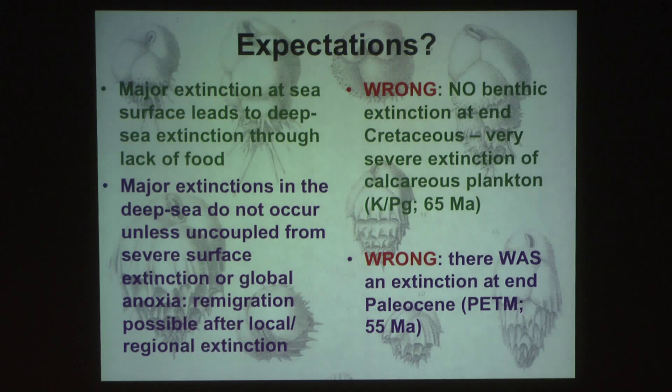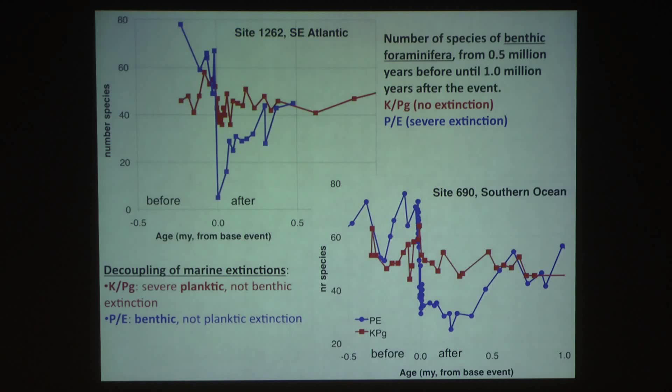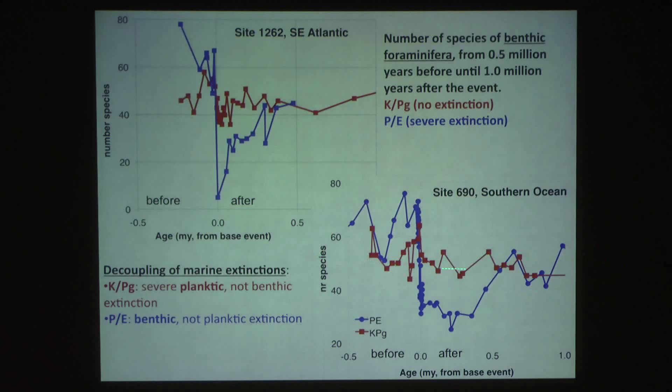And so if you look at this very simple plot — not a lot of data — but if you just look at rarefied species diversity across the Cretaceous-Paleocene and across the Paleocene-Eocene boundary, Cretaceous-Paleocene in red, Paleocene-Eocene in blue, at the same location in the Southeast Atlantic and the Southern Ocean, you can see that your benthic forams don't really care about impacting asteroids, but they get really nervous and many of them go extinct at a time that we have something going on with the carbon cycle.